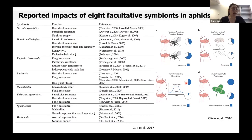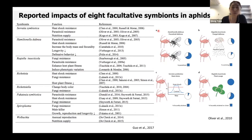Secondary endosymbionts can also provide fungi resistance. In the last few decades, a very large number of secondary endosymbionts have been discovered in worldwide populations of aphids, as summarized in a table published by Guo a few years ago.